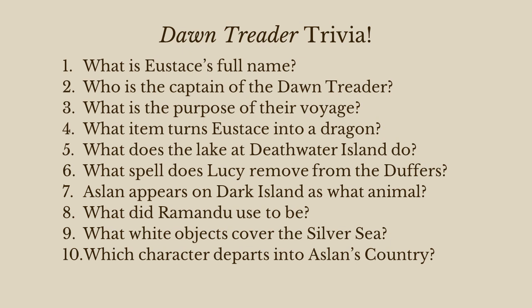Number four: what item turns Eustace into a dragon? It's a bracelet — a bracelet turns him into a dragon. Number five: what does the lake at Deathwater Island do? Turns things into gold. Number six: what spell does Lucy remove from the Duffers? It's an invisibility spell. Number seven: Aslan appears on Dark Island as what animal? He's an albatross. And there's actually some significant symbolism to the albatross, which we're going to be talking about today.